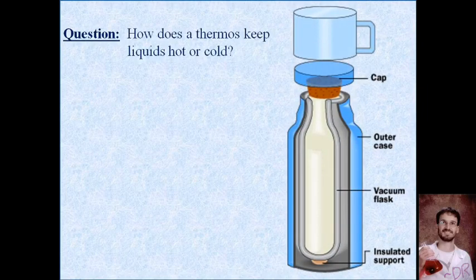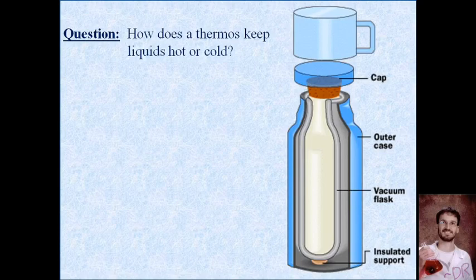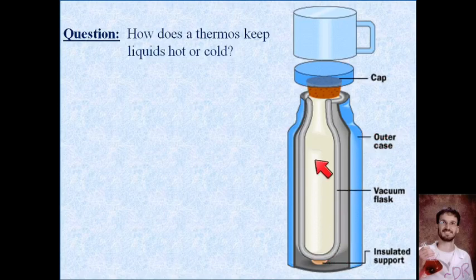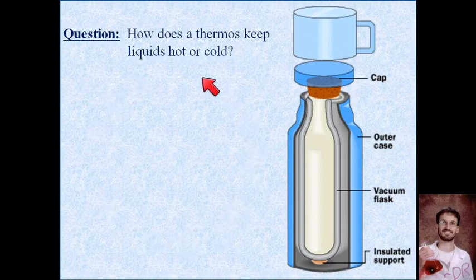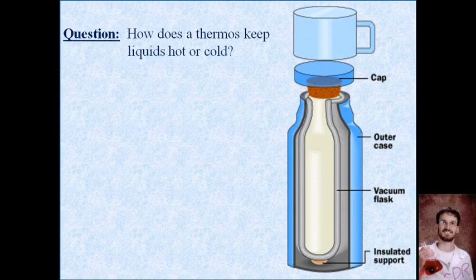So here we have a quick question: how do thermoses work? So thermoses typically have a couple of different layers. We have the outer case, we have the inner case where you're going to put your liquid, whether you want to keep it hot or cold, because thermoses do both. You have your cap, and then you have a space in between the outer and the inner layer. So use this information to try to explain how a thermos keeps liquids hot or cold, and we'll address this in class.